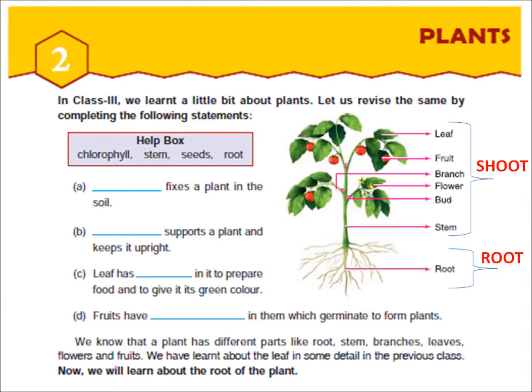C: Leaf has a substance in it to prepare food and to give its green color. The answer is chlorophyll. Do you know about chlorophyll? Chlorophyll is a green substance present in the leaf — due to this, leaves are green. The last question: fruits have a dash in them which germinates to form plants. The answer is seeds. Fruits have seeds in them which germinate to form plants. All of you write it and learn it also.